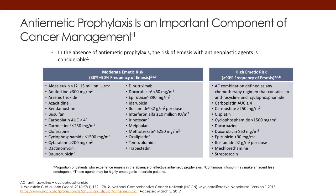Let's look at the antiemetic prophylaxis and the emetogenic potential of chemotherapy. There are two primary categories. One is moderate emetogenic risk — agents that produce emesis in 30 to 90 percent of patients who receive them. Some of the primary agents here are oxaliplatin, which would be on the lower end, and carboplatin, which would be on the higher end of that 30 to 90 percent span.